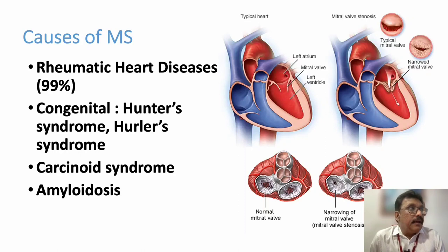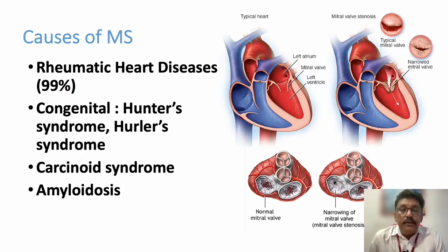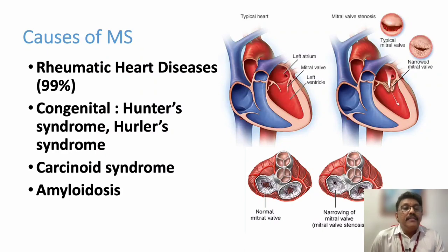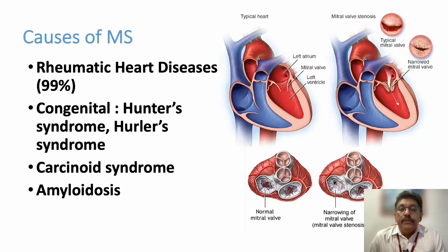Some patients can have mitral stenosis with mitral regurgitation. Congenital conditions like Hunter syndrome and Hurler syndrome can also produce mitral stenosis. Rarely, carcinoid syndrome and amyloidosis can also produce mitral stenosis.